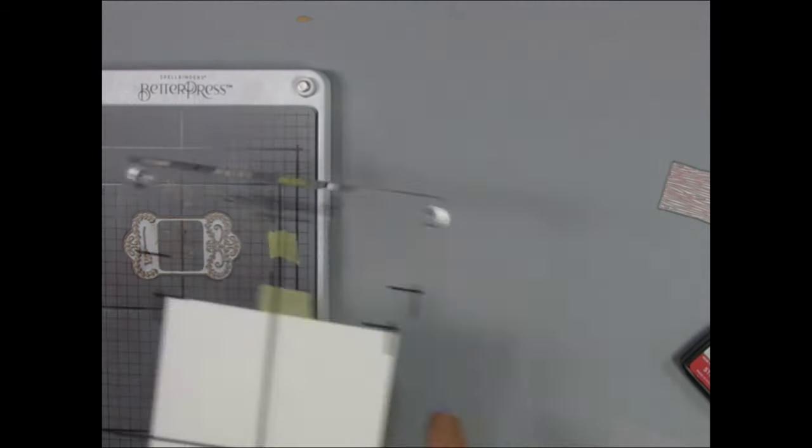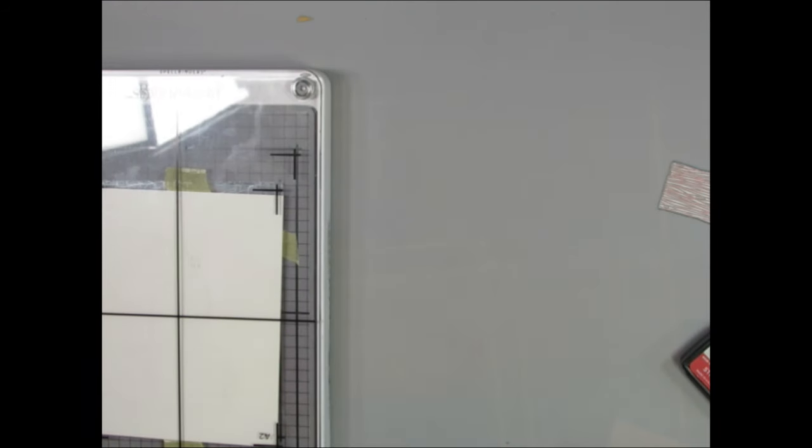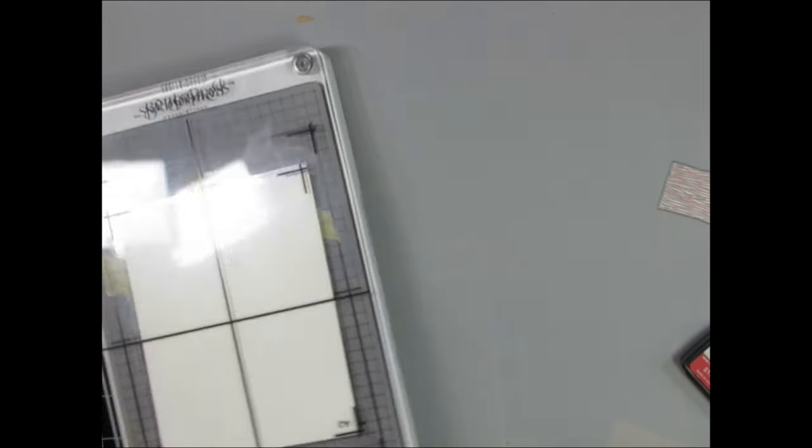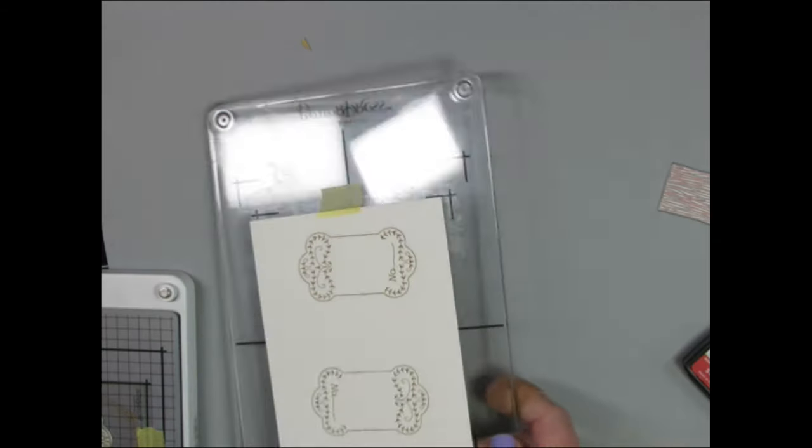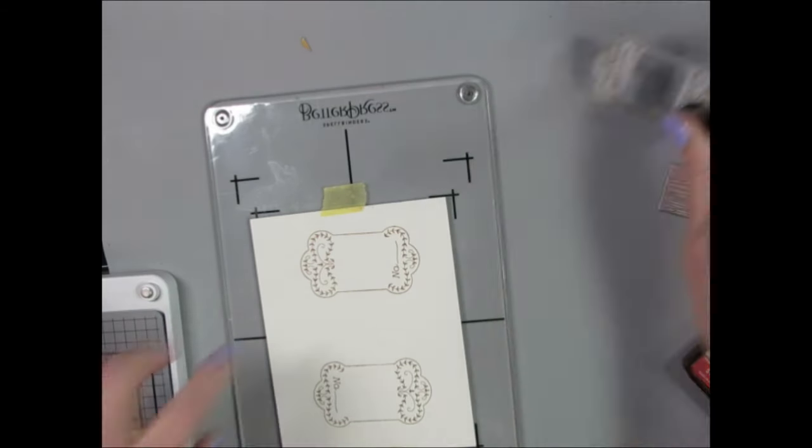And then I just rotated the paper and I'm running it through one more time after I re-inked the Better Press plate. I'm going to run it through my Spellbinders Platinum 6 machine. And I'm going to go ahead and remove that, and then you can see I have two bobbins here.